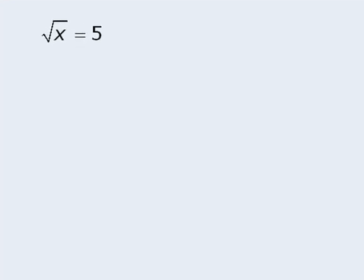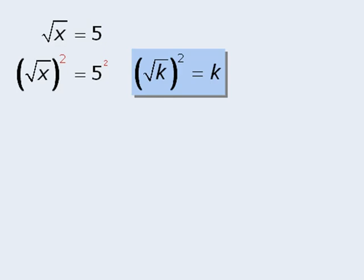As you can see here, the variable x is inside the square root. To pull the x outside the square root, we'll raise both sides of the equation to the power of 2. We do this because of the property that says if we raise the square root of some value k to the power of 2, this will be equal to k.